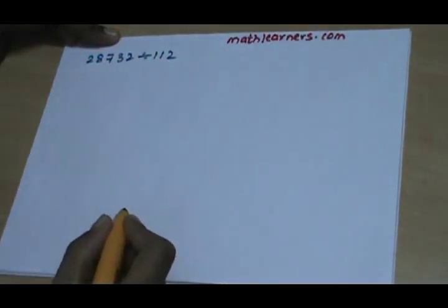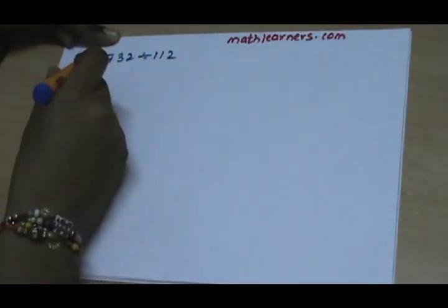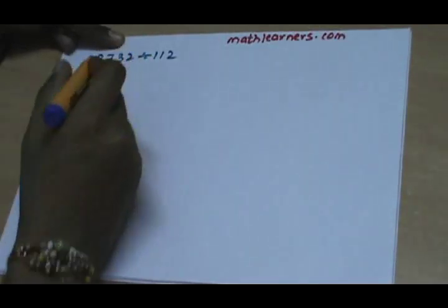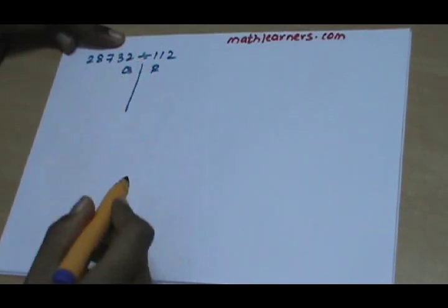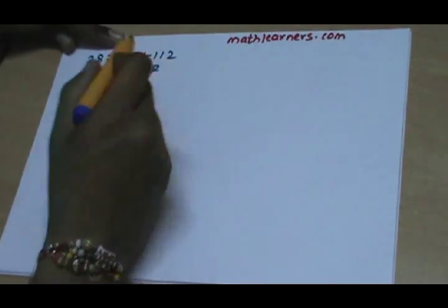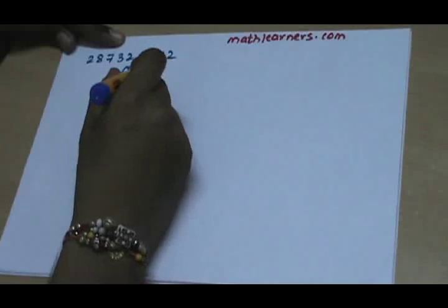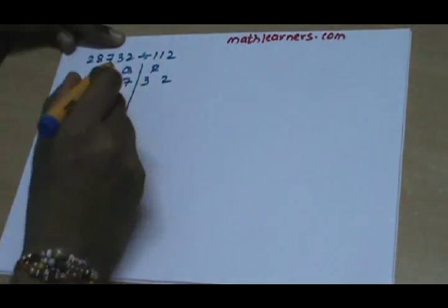Let's say suppose we want to divide 28732 by 112. So divisor is 112 and dividend is 28732. The process says that we split dividend into two parts, quotient and remainder, such that remainder will have one digit less than that of divisor. As divisor has three digits, remainder part will have two digits. So remainder will have 32 and 287 will be present in quotient.